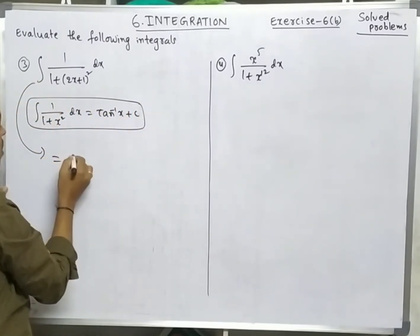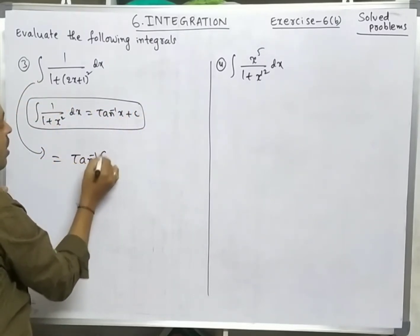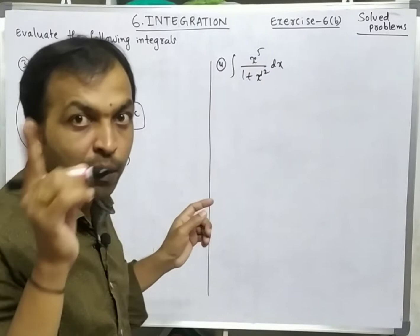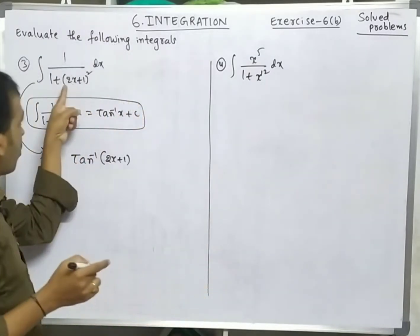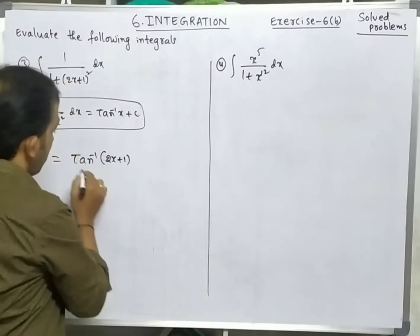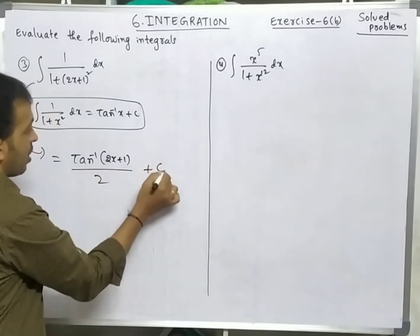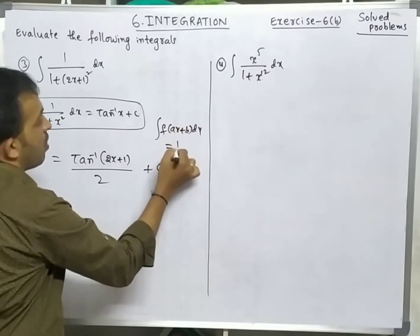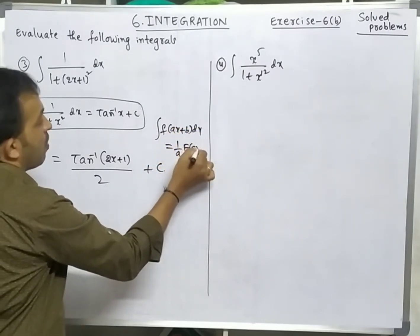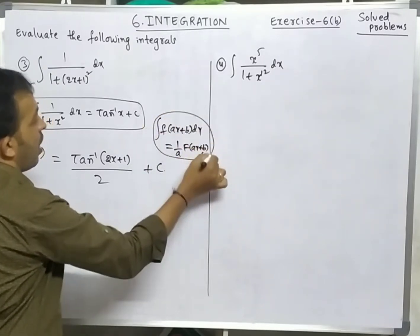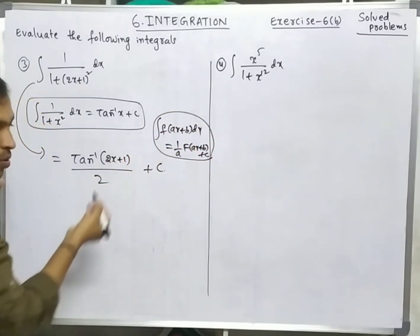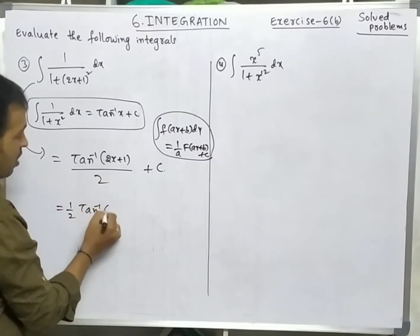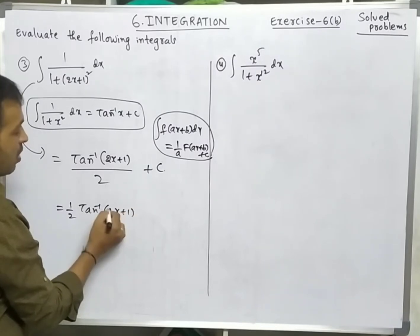Students, you have to remember the formulas. The answer is tan⁻¹(2x+1), but remember: before x we have a coefficient constant — we write that coefficient in the denominator. The formula is integration of f(ax+b) dx = (1/a)·f(ax+b). So the answer is (1/2)tan⁻¹(2x+1) + c.